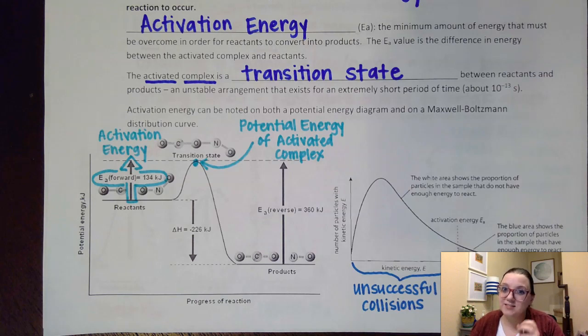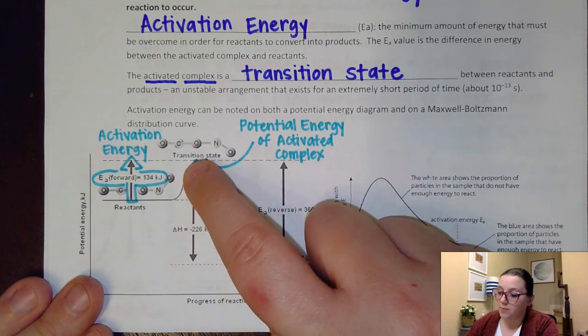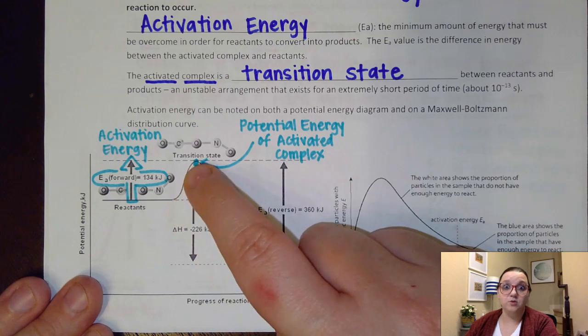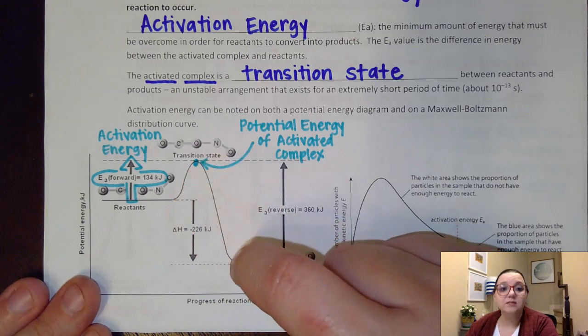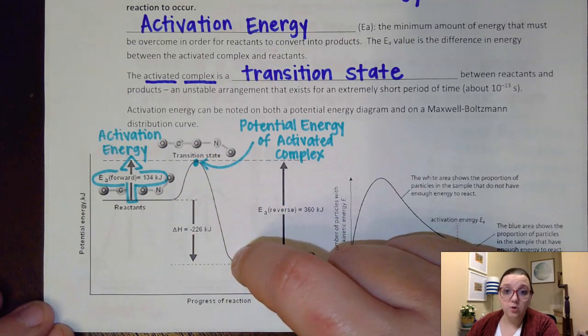Remember it takes energy to break bonds, and so then that way once they're broken, then we can reform them in a new configuration and release that energy. So that's why you always see these graphs go up then down. It takes energy to break those bonds and it frees energy when we reform the new bonds.